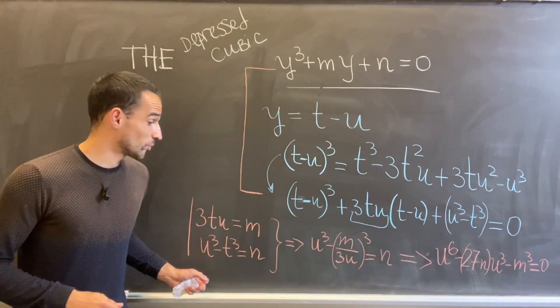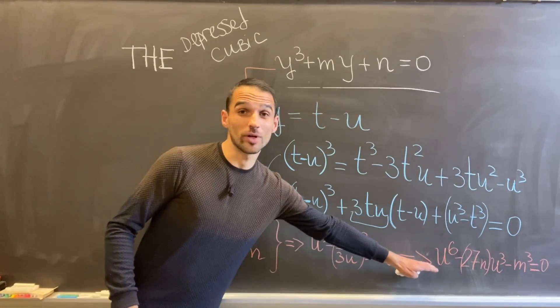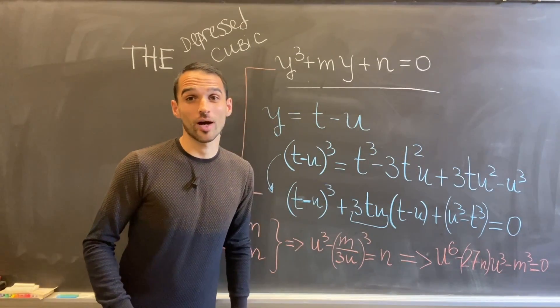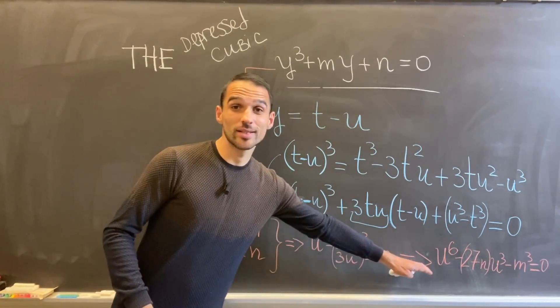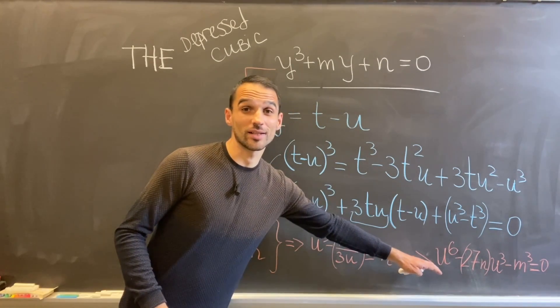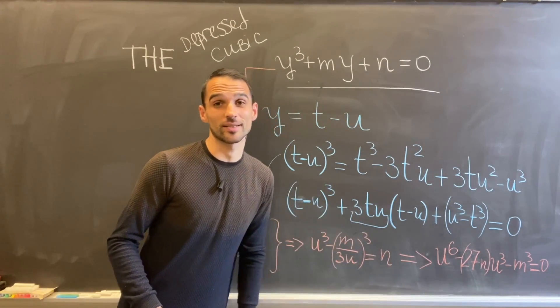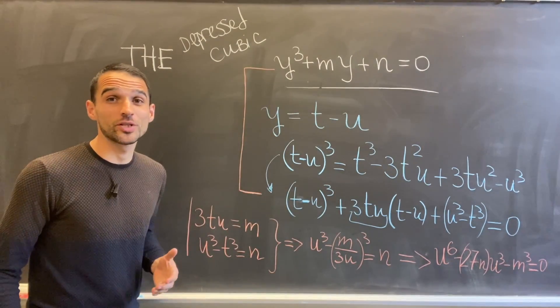So we just need to solve this system of two equations. But what is really cool here is that this boils down to solving a quadratic equation, and we already know how to solve this. This is indeed a quadratic equation in disguise because if we just write another letter instead of u³, then we get a quadratic.